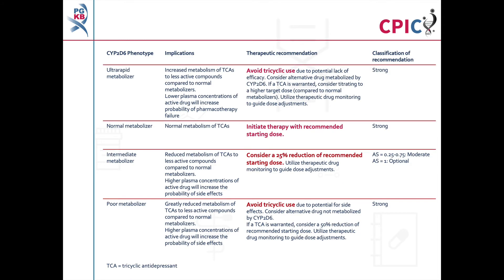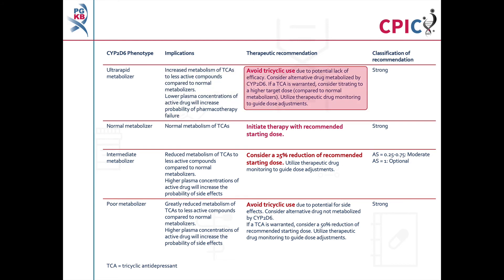These are the CPIC dosing recommendations for nortriptyline. Patients with a CYP2D6 ultra-rapid metabolizer phenotype will have increased metabolism of TCAs such as nortriptyline to less active compounds. Use of TCAs should be avoided in these patients. If use of a TCA is warranted, consider titrating to a higher target dose than for normal metabolizers.